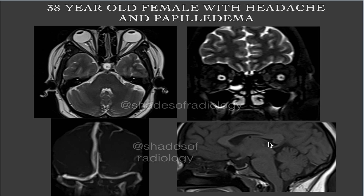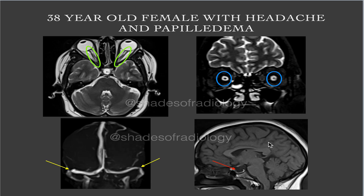Let us go with the discussion of the findings. On the axial T2-weighted image you can see bilateral optic nerves are tortuous, and you can see the prominent subarachnoid space. Even on the coronal images you can see the thickness of the subarachnoid space is increased on coronal T2 fat-sat. On MR venogram you can see a narrowing of bilateral transverse sinus at the groove where it is going to form the sigmoid sinus.